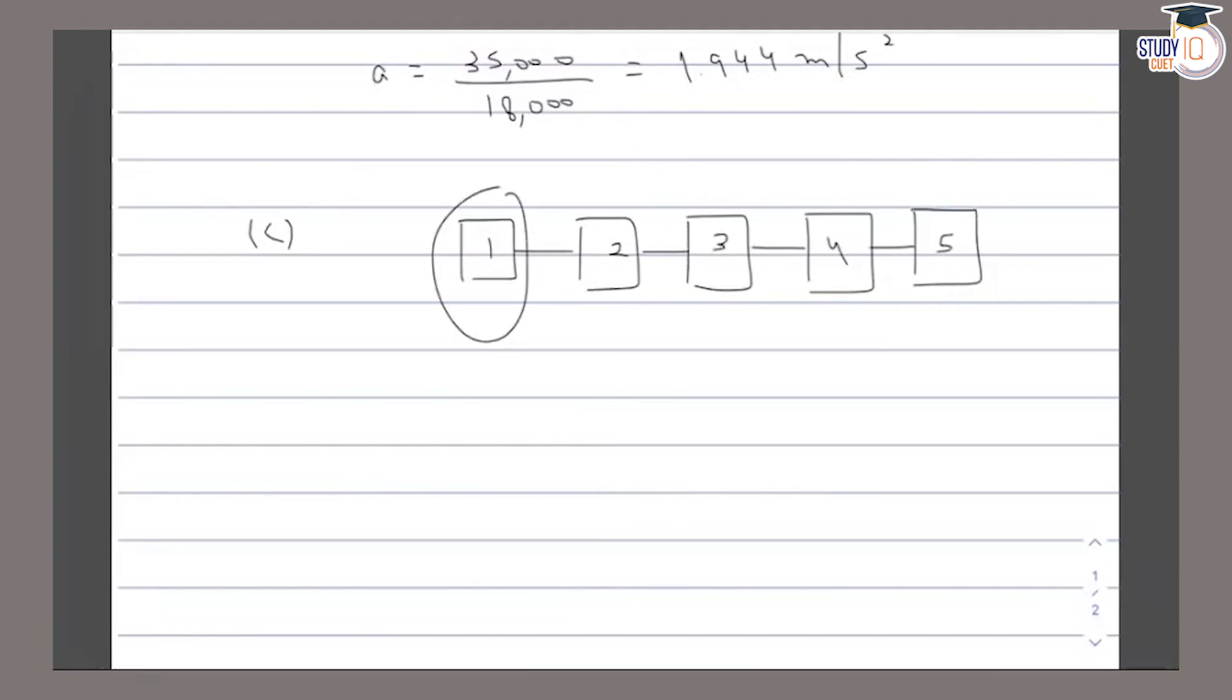To find the force of wagon 1 on wagon 2, we consider that wagon 2, 3, 4, and 5 are being pulled. So we need the total mass of wagon 2, 3, 4, 5, which is 4 wagons.